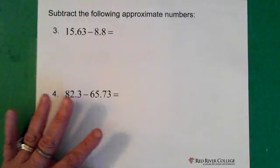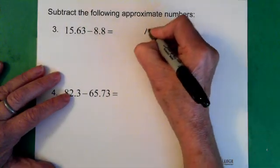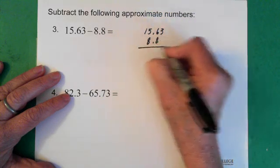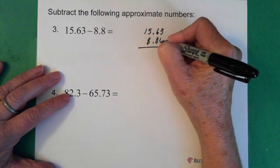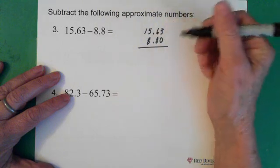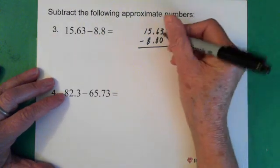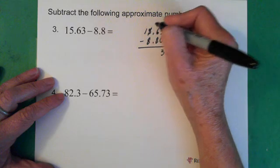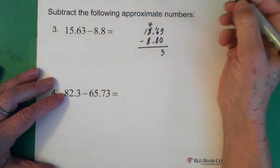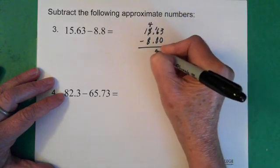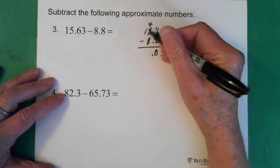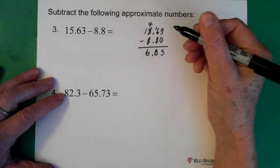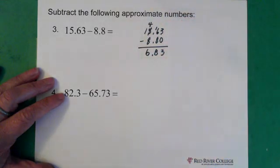Next question: 15.63 minus 8.8. So 15.63 and we have 8.8. Now the number here that we don't see is essentially 0, so we can just put the 0 in just to see what we're subtracting. So, remembering that we're subtracting: 3 minus 0 is 3. 6 minus 8 we can't do, so we borrow from the 5. This becomes a 4. We put a 1 here. 16 minus 8 is 8. Now we have our decimal here. 14 minus 8 is 6. And again, if you want to check, you can just add these two together and they will equal 15.63.